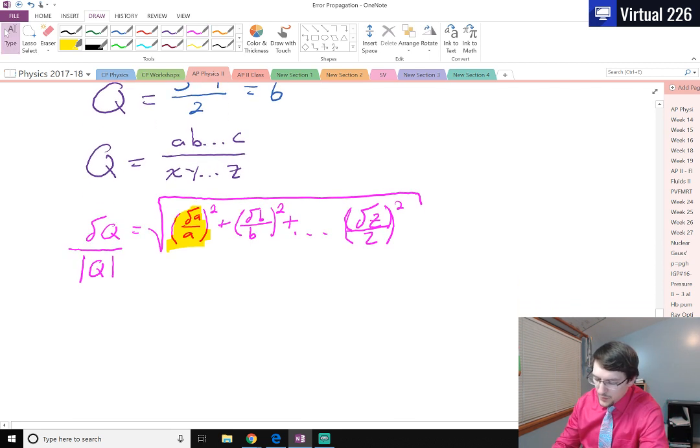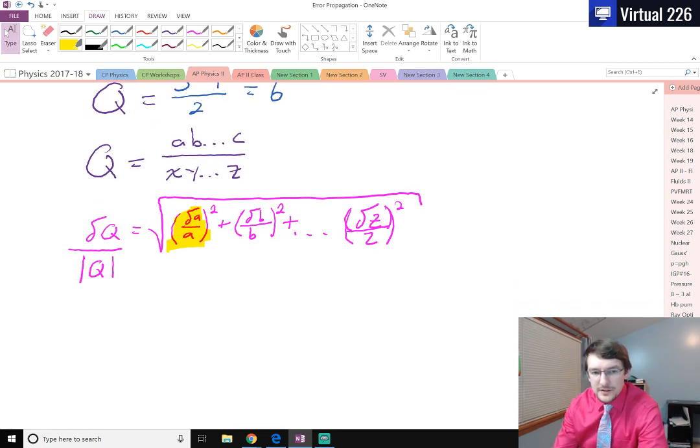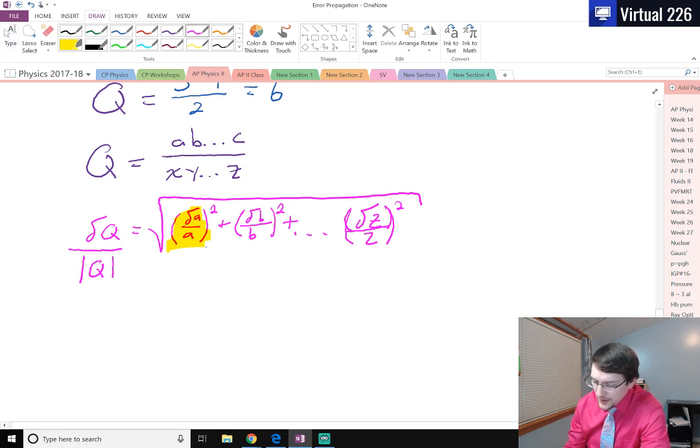Which means that whenever we would like to find the uncertainty in Q, del Q, we need to take the quadrature of the uncertainties and multiply it by Q. That will give us the value of del Q there.